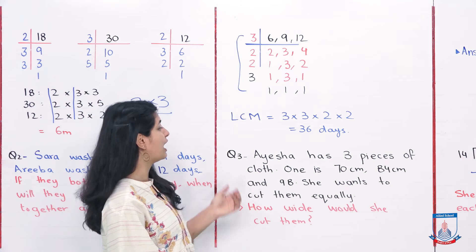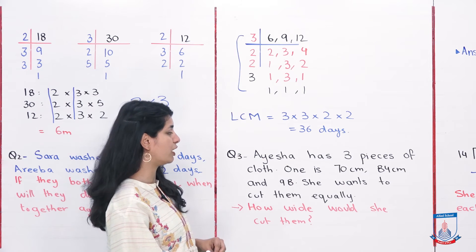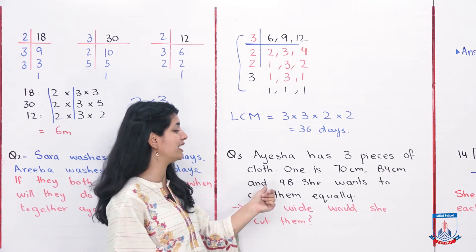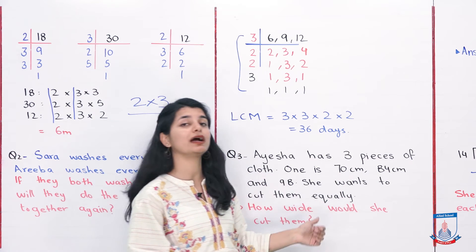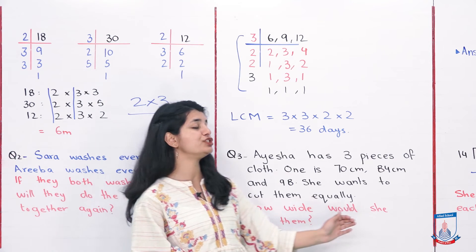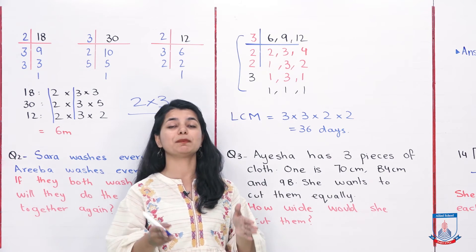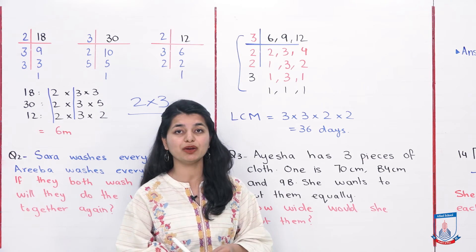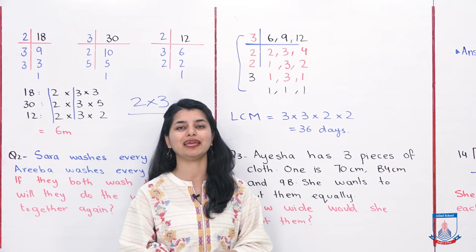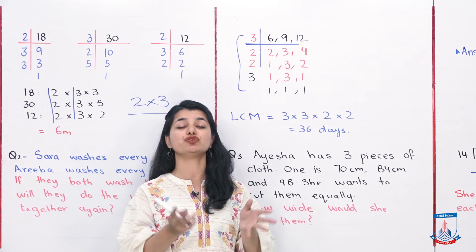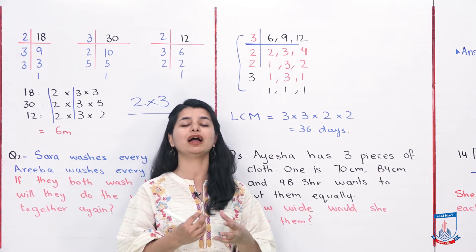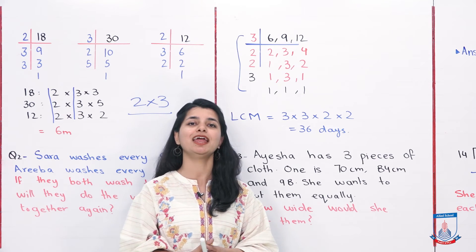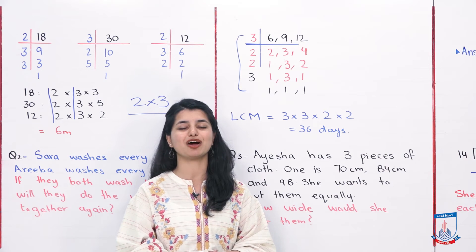Third, you have a word problem. Aisha has 3 pieces of cloth: one is 70 cm, the other is 84 cm, and the third one is 98 cm. She wants to cut them equally. How wide would she cut each of them? In the first question, we had to cut 3 different lengths. We have to cut the same length, equal length. So we have to find the highest common factor, which can be divided by all 3 numbers. Let's see how we will solve the highest common factor here.